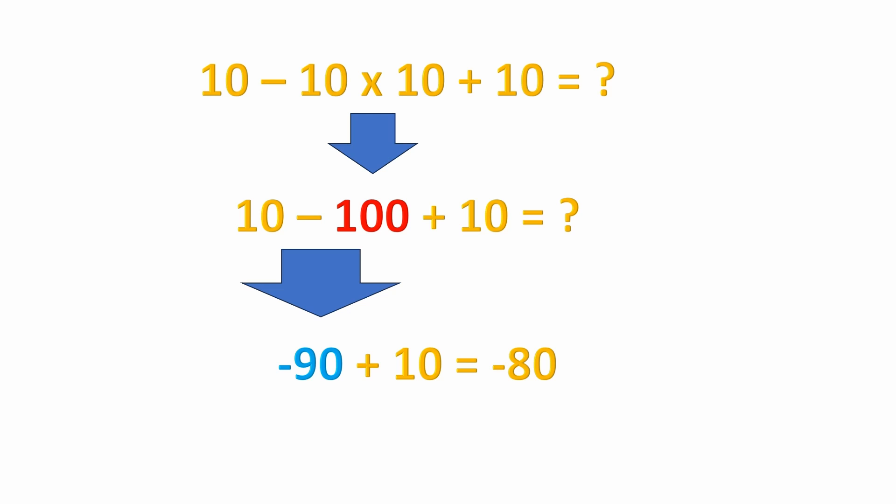So we'll go through this. 10 minus 10 times 10 plus 10 equals what? Well, first of all, we do the multiplication. 10 times 10 is 100.